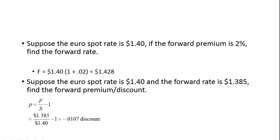A couple of quick numerical examples. Suppose the euro spot rate is $1.40. If the forward premium is 2%, the forward rate is $1.40 times 1.02, which is $1.428. In another example, suppose the spot rate is $1.40 and the forward rate is $1.385. Using the formula F over S minus 1 gives us negative 0.0107. Because it's negative, it means the forward rate is at a discount to the spot rate — it's lower.